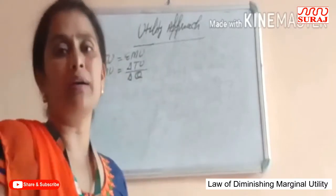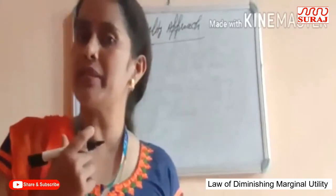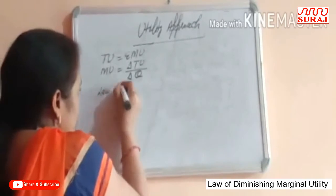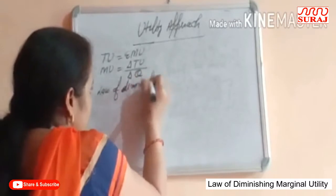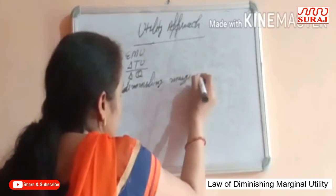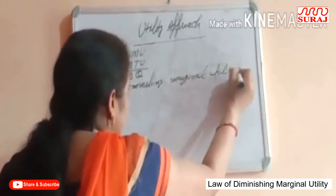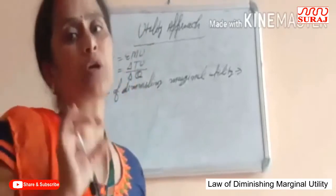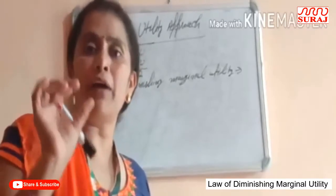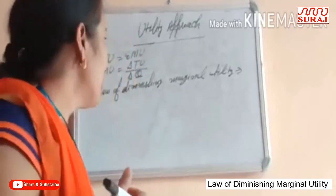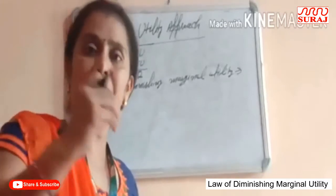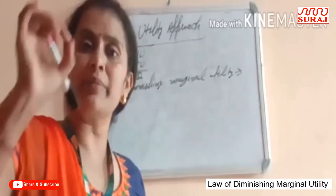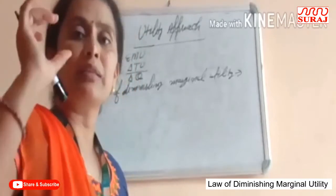Now we discuss the law of diminishing marginal utility. The law of diminishing marginal utility states that as the consumer consumes the standard unit of the commodities continuously, then the consumption of every additional unit must be declined. It means, for example, if the consumer consumes any commodity continuously, then as he consumes the additional unit, consumption starts decreasing.